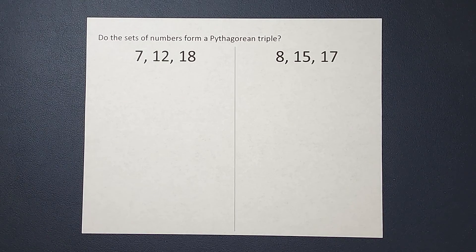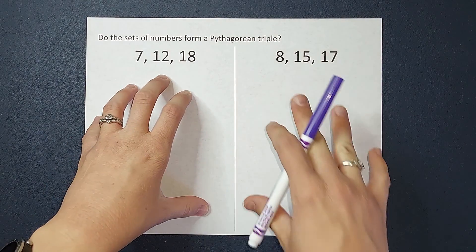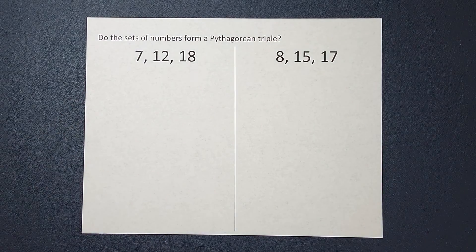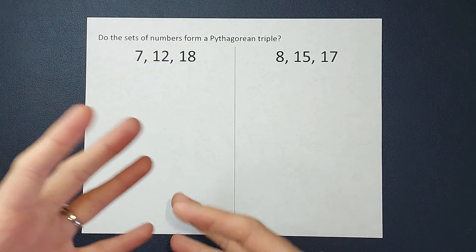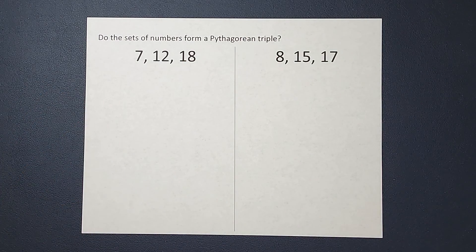Hey guys, we are working with Pythagorean triples today. When you are asked if a set of numbers is a Pythagorean triple, you're being asked, could these be the lengths of the three sides of a right triangle? Would they work?